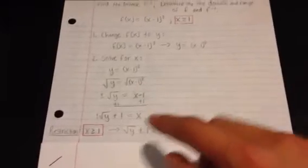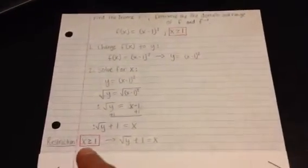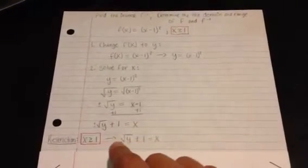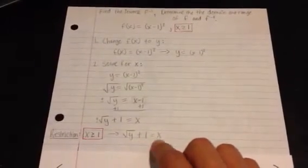But remember, because of the added restriction that was included up here at the top, x can only be greater than or equal to 1. So, in this case, your answers can only be positive. So you're left with square root of y plus 1 is equal to x.